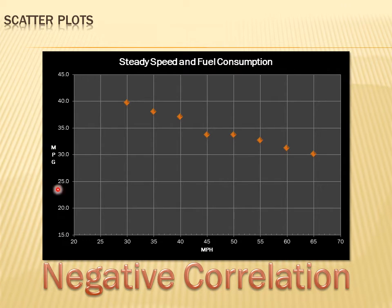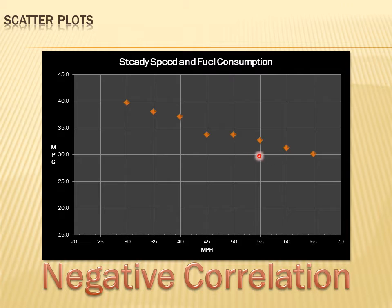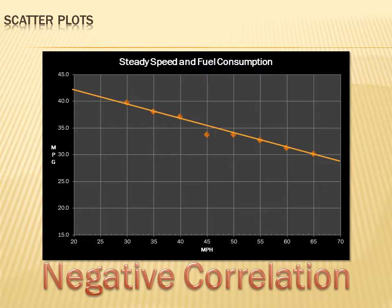We can create a scatter plot for this data. I put miles per gallon on the y-axis and miles per hour on the x-axis. At 30 miles per hour, we got close to 40 miles per gallon; at 35 miles per hour, about 38 miles per gallon; and at 65 miles per hour, our miles per gallon had gone down to 30. We can draw a best-fit line, and you can see it's a negative correlation — as miles per hour increases, miles per gallon decreases.